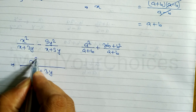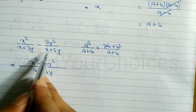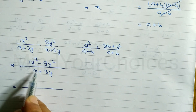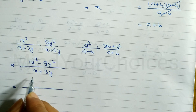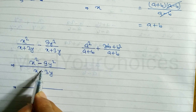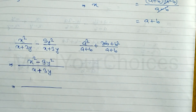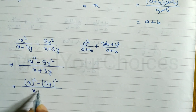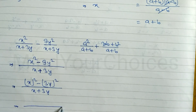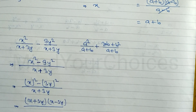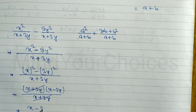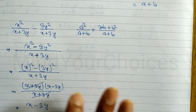We just write the numerator: x² minus 9y². Keep in mind — when denominators are the same, we simply write the numerator. We cannot cancel the square directly; we must use the formula. We write x²-9y² as (x)²-(3y)², applying the difference of squares: (x+3y)(x-3y) divided by (x+3y). The (x+3y) terms cancel and the remaining answer is (x-3y).